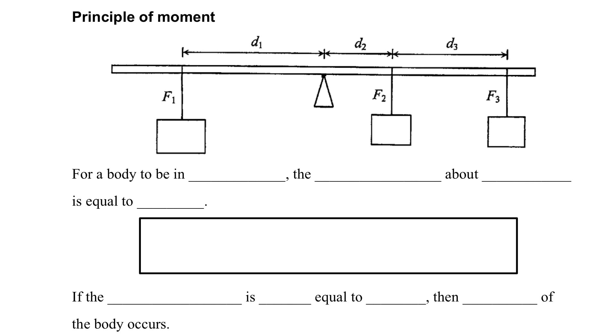Another idea is the principle of moment. So what is principle of moment? It is defined in this way. For a body to be in equilibrium, then the resultant moment about any point is equal to zero. That means the net moment is equal to zero.